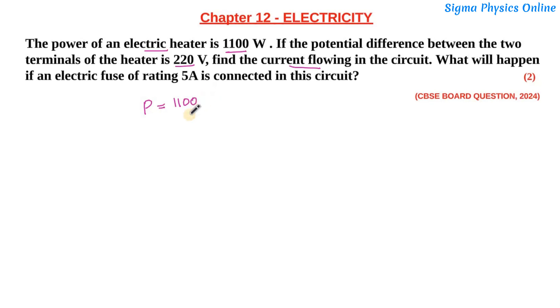And the potential difference V is given as 220 volt. Now we have to find out the current. So what's the relation joining power, voltage, and current? It's P is equal to V I. So I will be P by V.